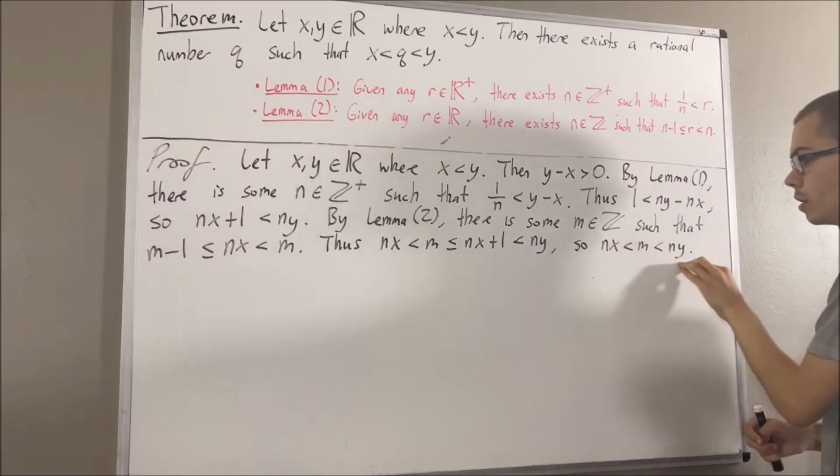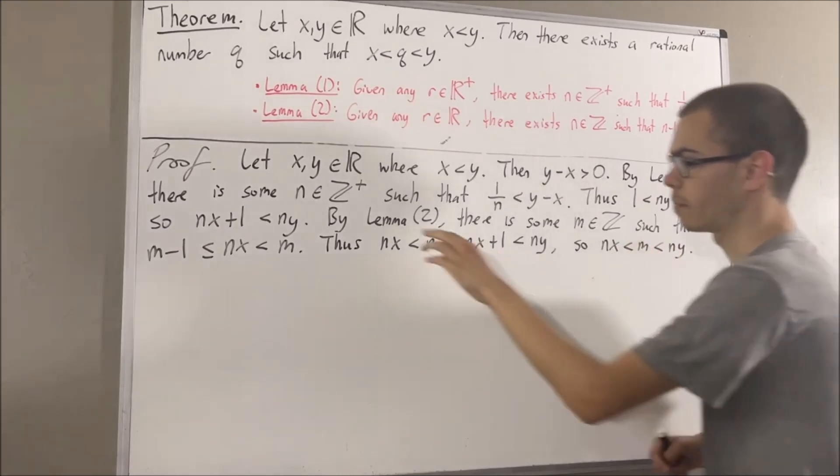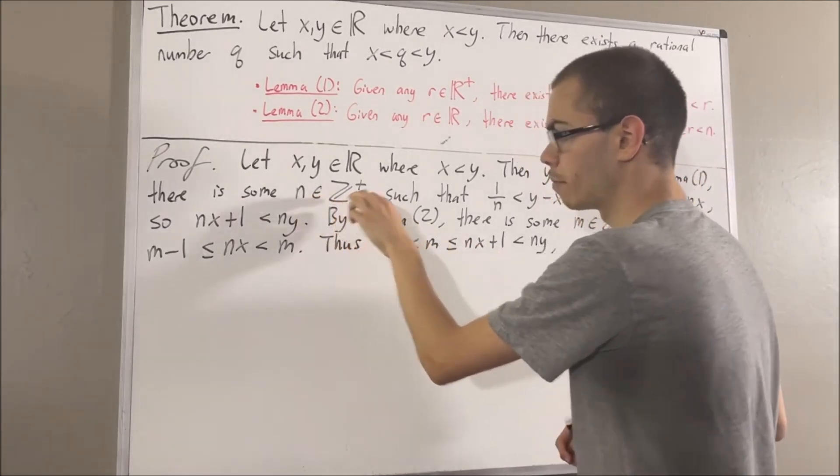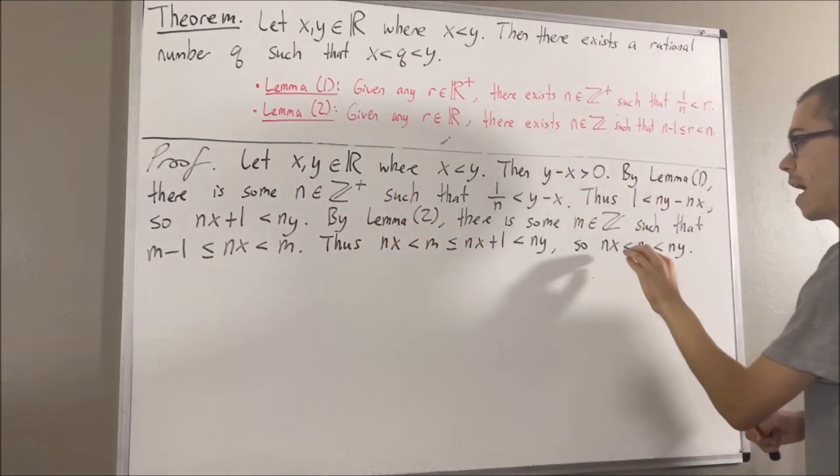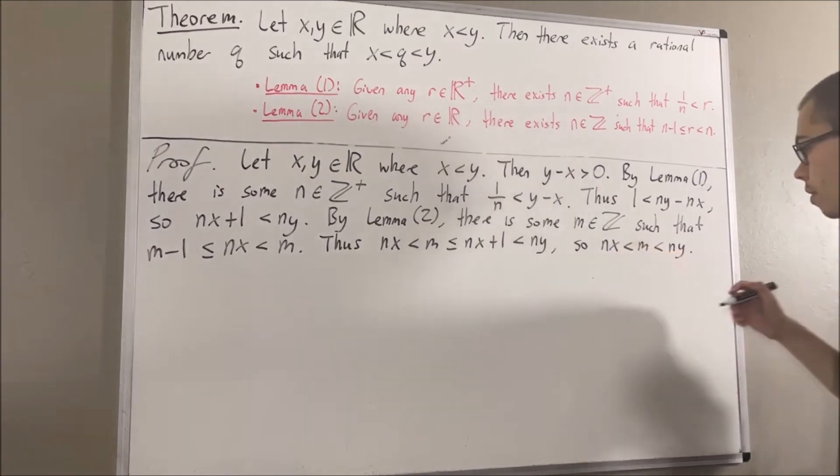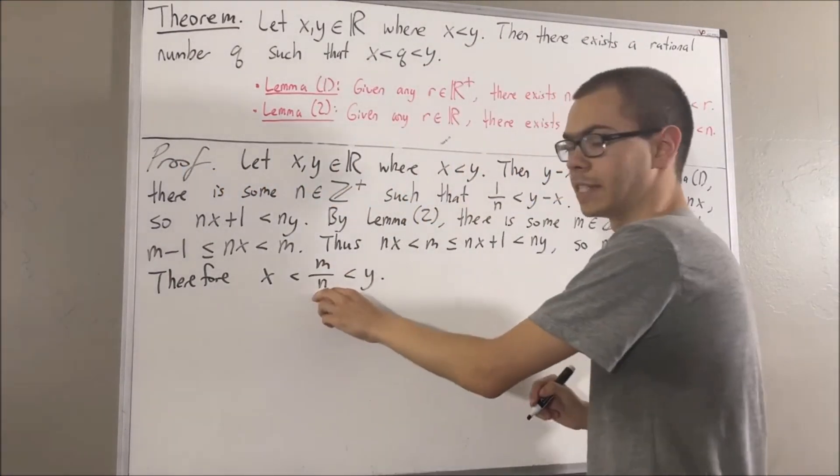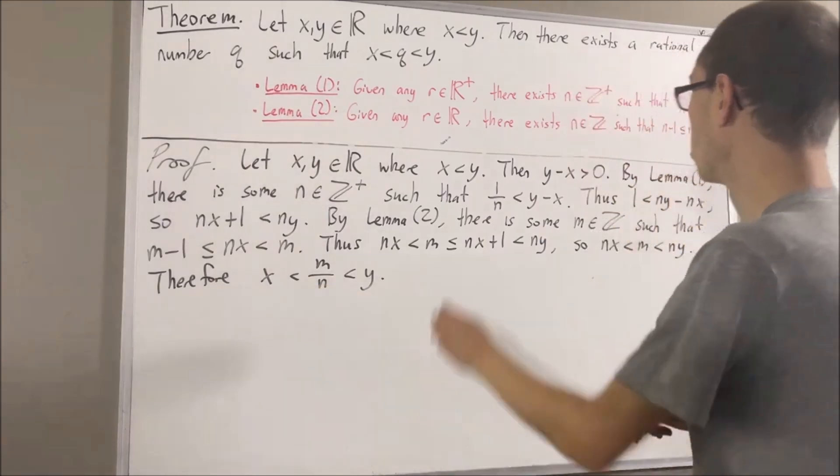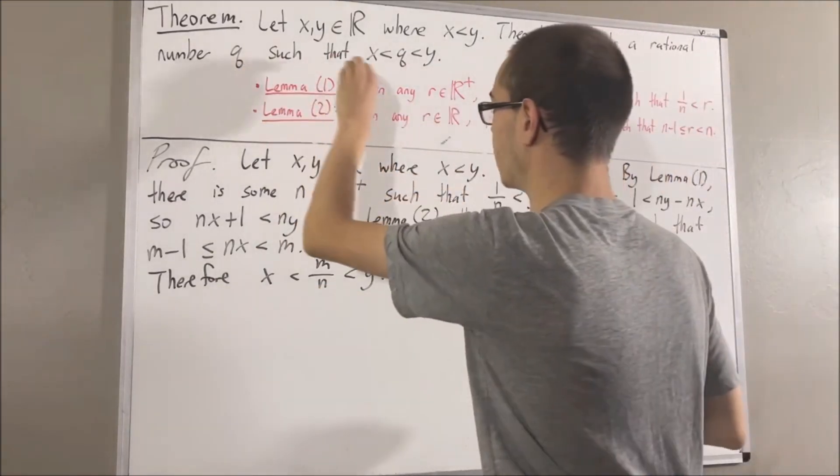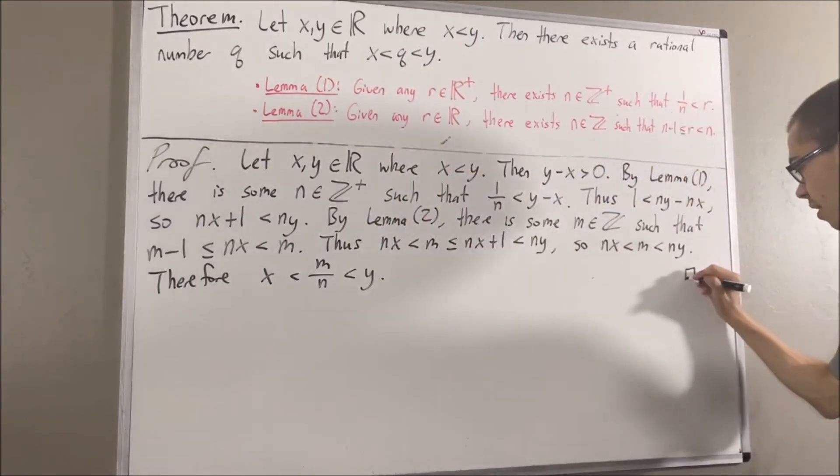And now, if we take this inequality and divide by n on all three sides, which we can do because n is a positive number, we get that x is less than m over n, which is less than y. And m over n is a rational number. So we have found a rational number that satisfies this condition. This completes the proof.